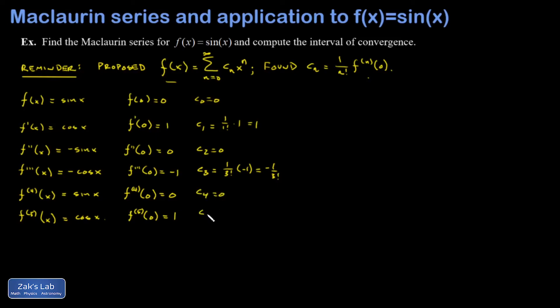c4 vanishes. c5 is 1 over 5 factorial. Fifth derivative of f evaluated at 0, which was 1. So I get 1 over 5 factorial.